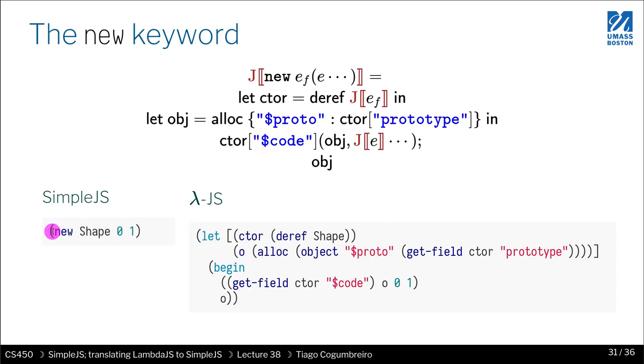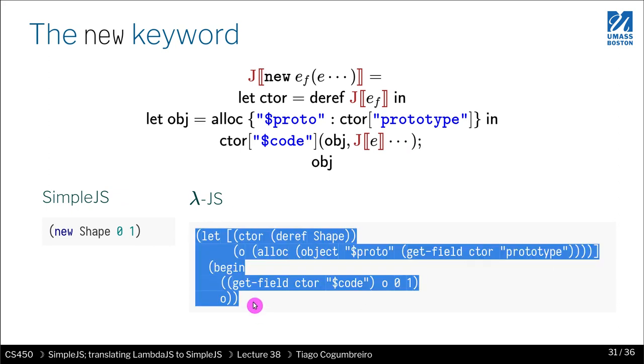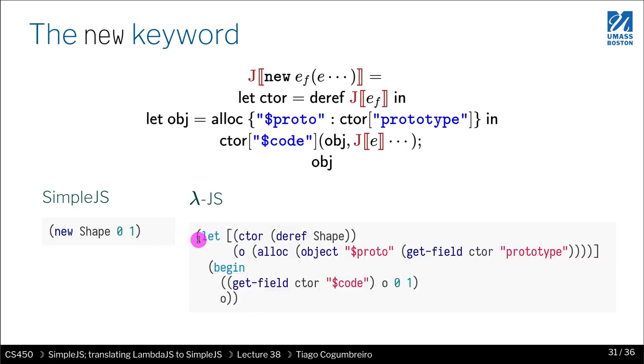Let's look at the example. The example is doing new shape and passing 0 and 1. That generates this whole code, it generates a lot of code. What do we do here? First, we dereference shape. This would be the translation of shape. Be very careful that you have to recursively translate the object. Otherwise, you would be doing deref of a source variable rather than a target variable. That is handled recursively. Then we declare it to a variable. Here we're declaring it to CTOR.